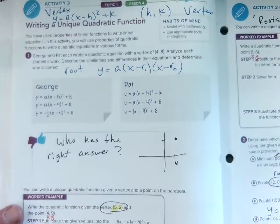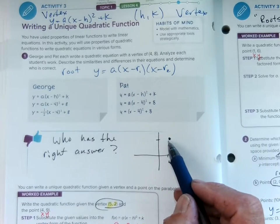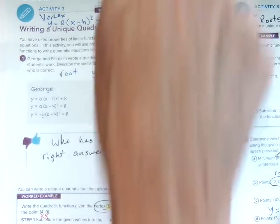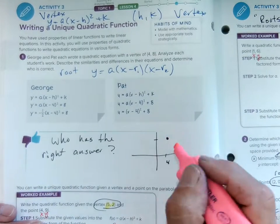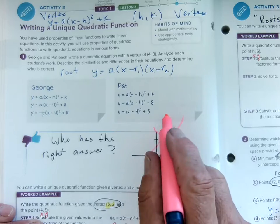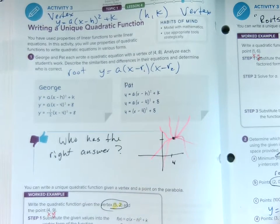So we looked at this first example and we realized that really if all you have is one point, it is not enough because there's many, many different parabolas that could go through that. You could have a parabola that looks like this, you could have one that looks like this, you could have one that looks like this. There's so many different ways to draw this parabola. So you need another point.